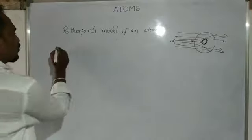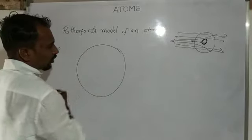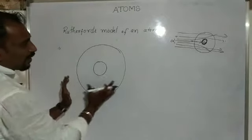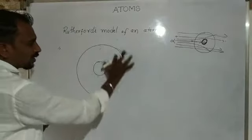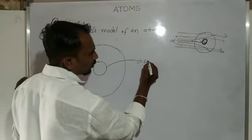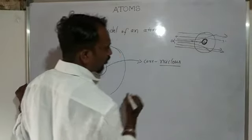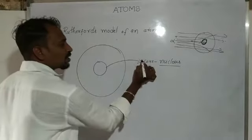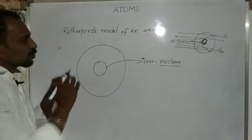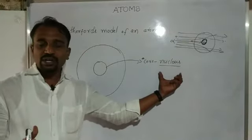The first point: we consider the atom, and the core of the atom is called the nucleus. This is the first point of the Rutherford model of an atom. The core of the atom is the nucleus.